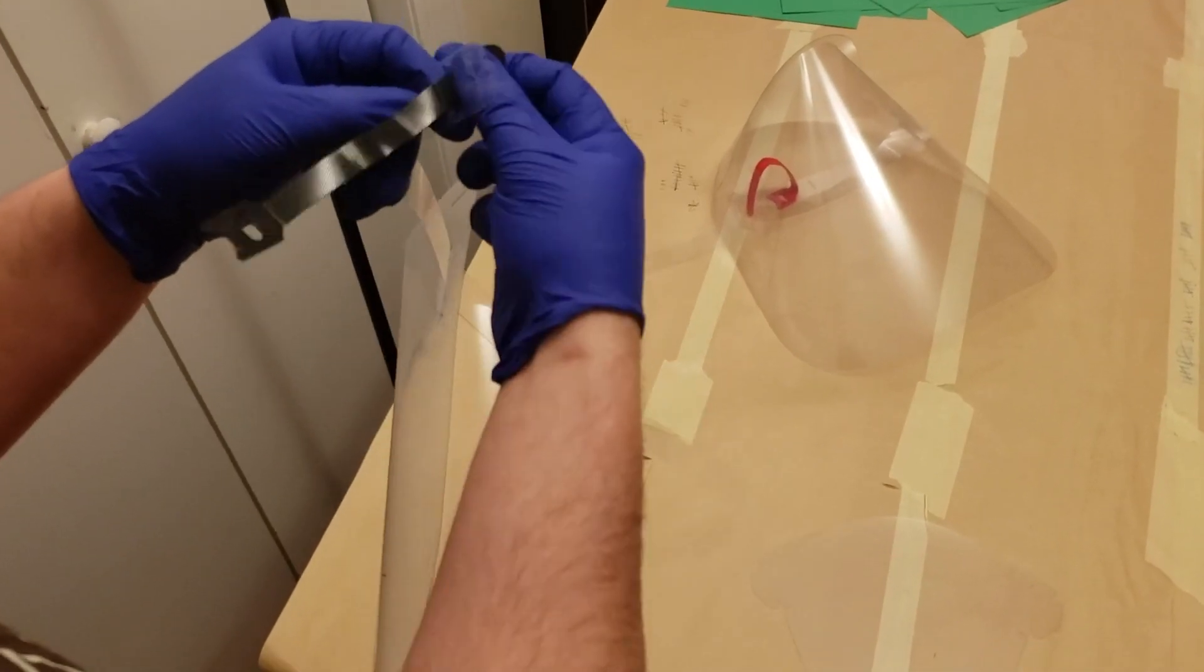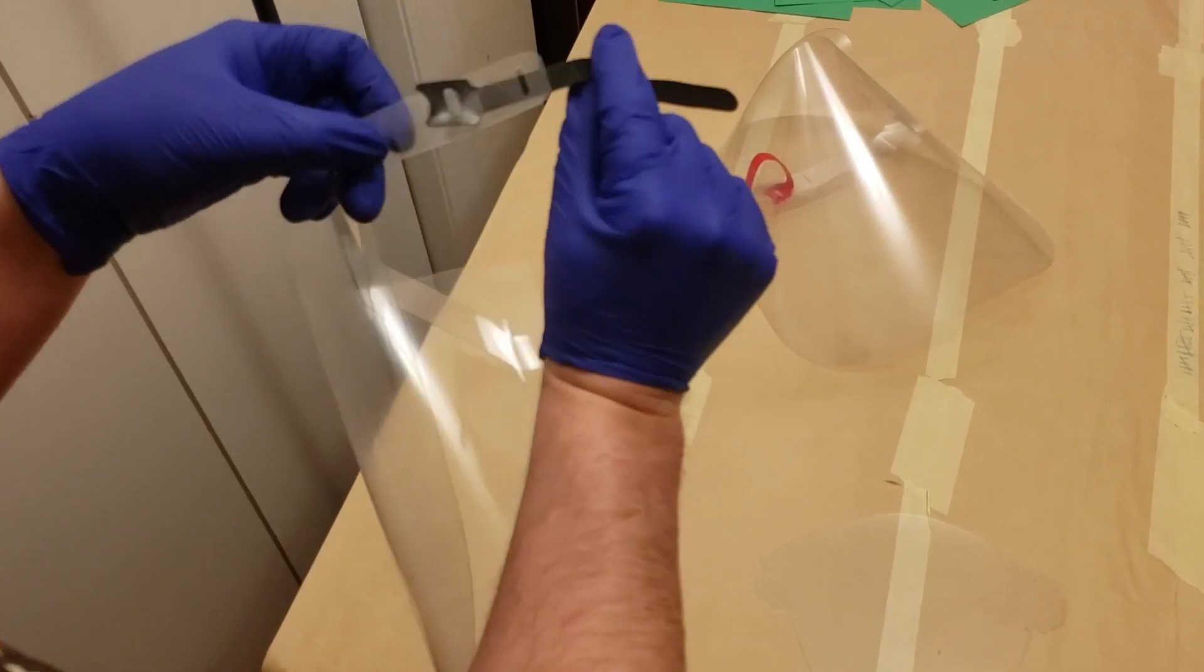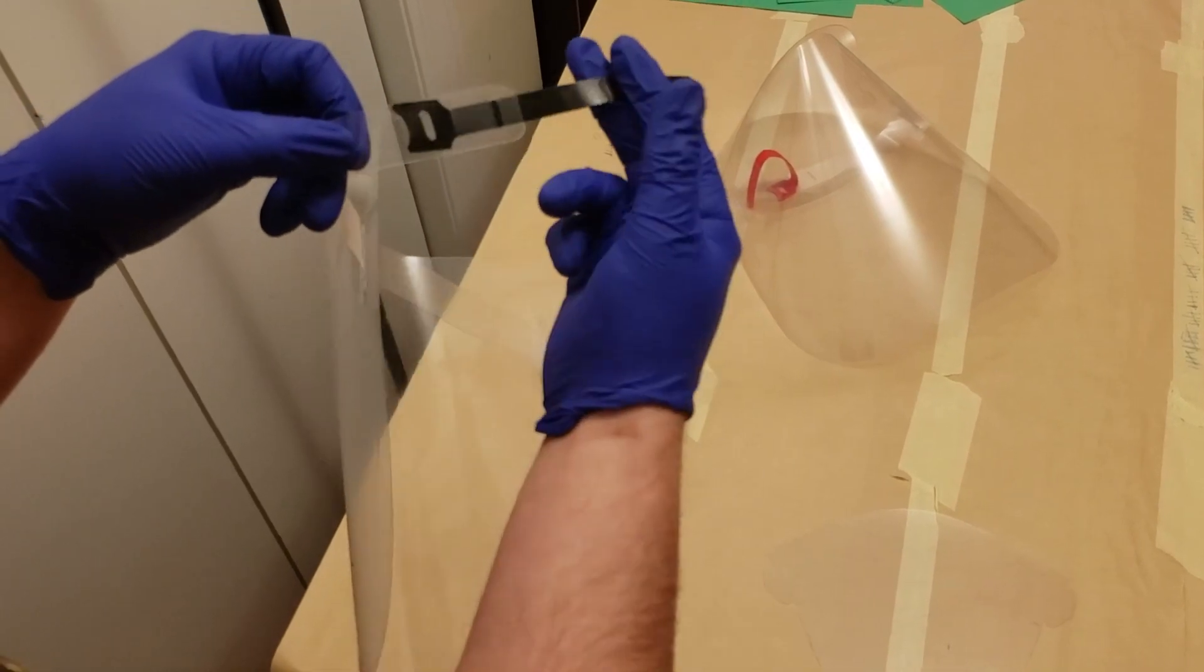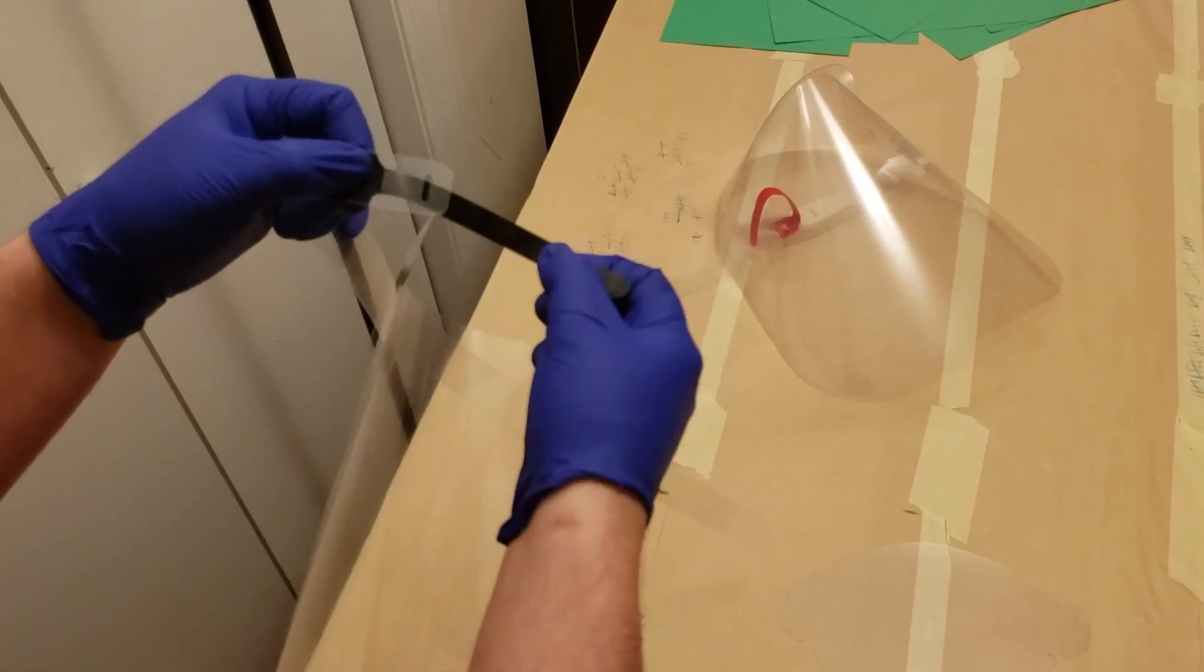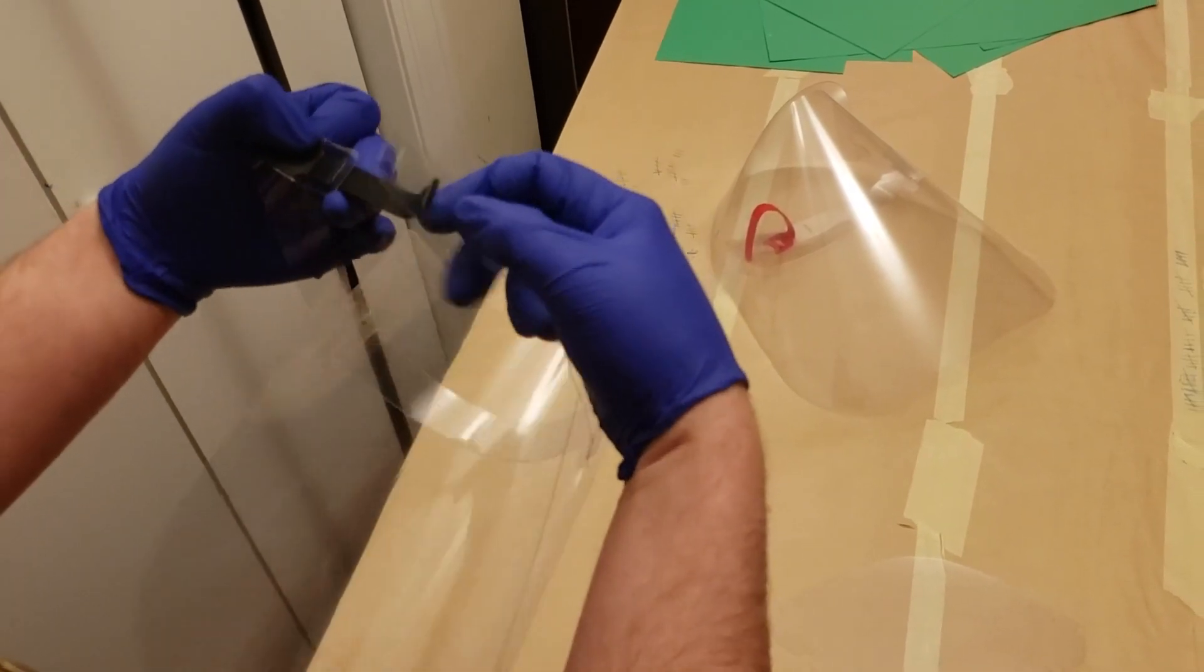So we're going to weave this through and this will be what keeps it on your head. So when you weave it through, you can choose different holes depending on your head size. I would start with a middle hole and then work from there. Also make sure that the soft side is facing your head. So then we're going to weave that through here.